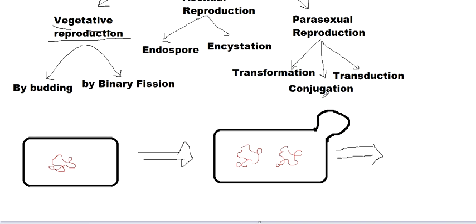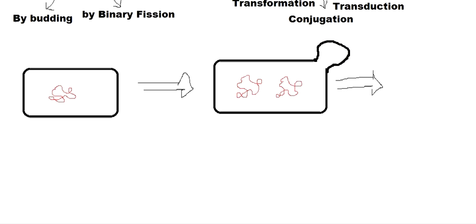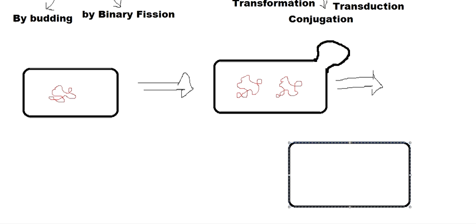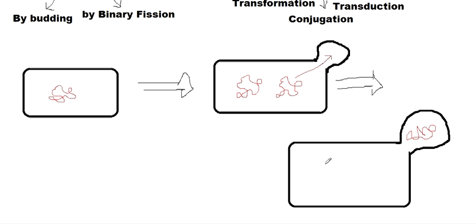So here we have a bacterial cell again. The bud will actually enlarge this time — the bud is growing in size. And the genetic material which we had replicated in the previous step will actually move into this bud. So we will have genetic material over here in the bud, and the bacterial genetic material will be there as usual in the parent cell. The bud will grow and grow and eventually separate out from the bacteria.